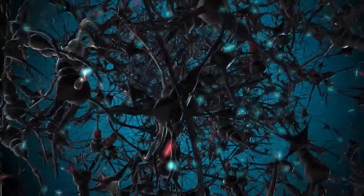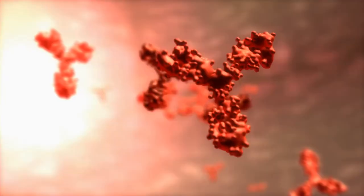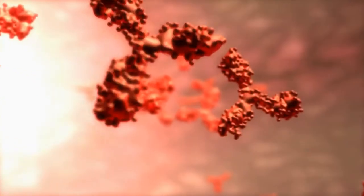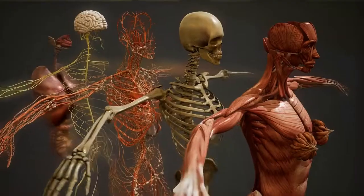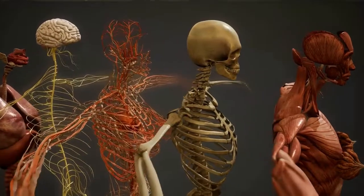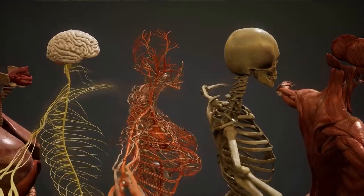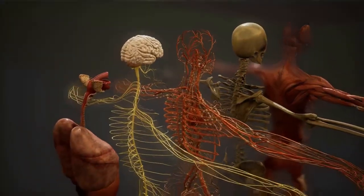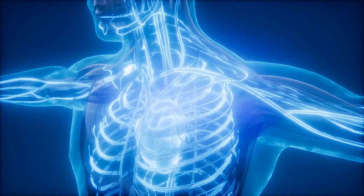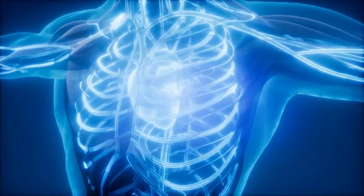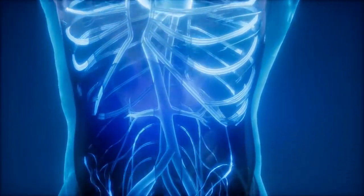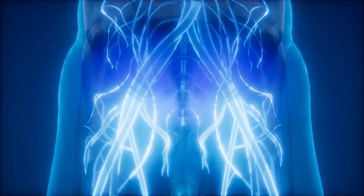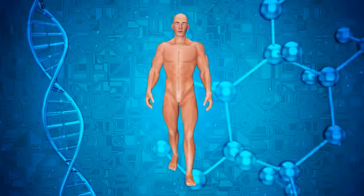The human body is made up of trillions of cells, each with a specific function, working together to keep us alive. Let's start with the basic building block of the human body: the cell.